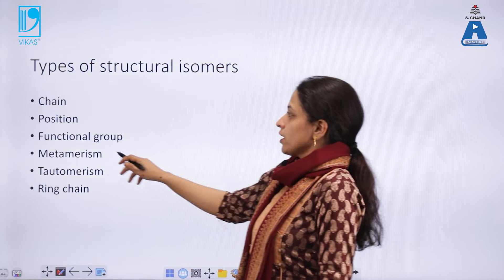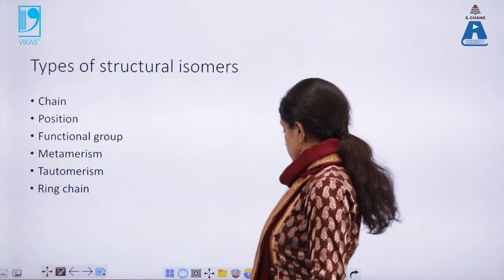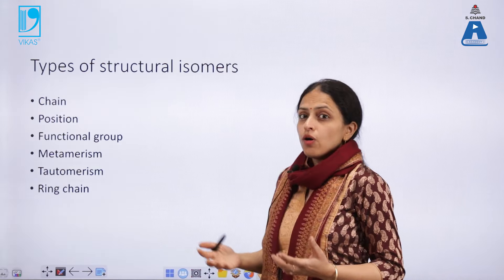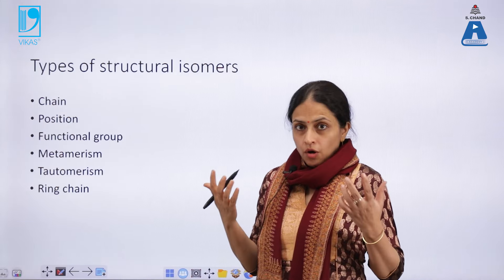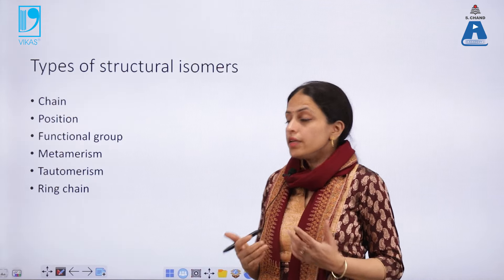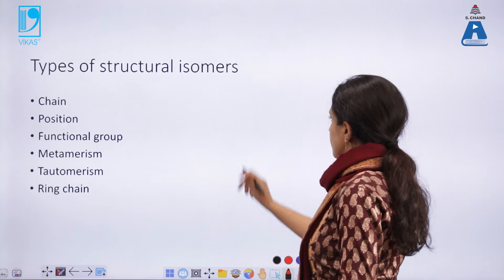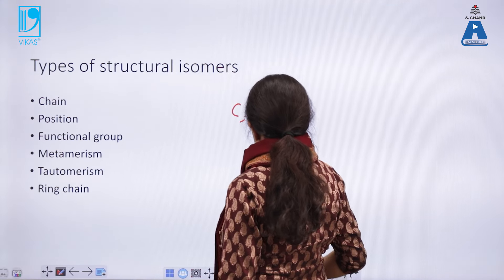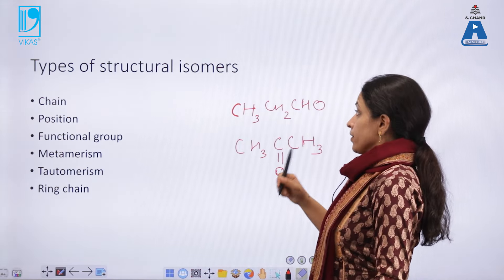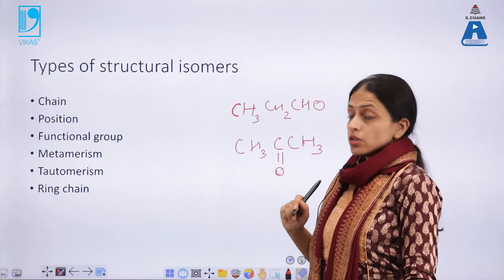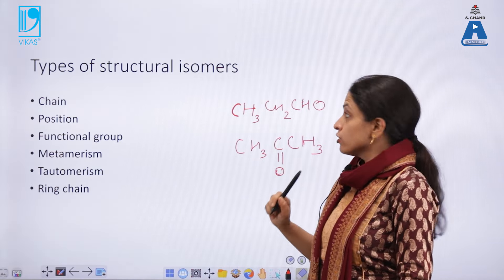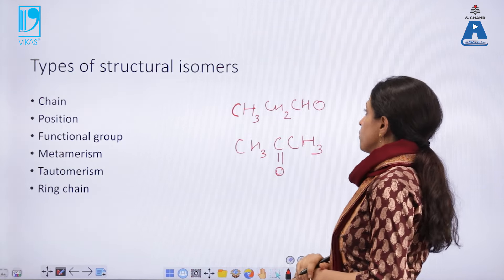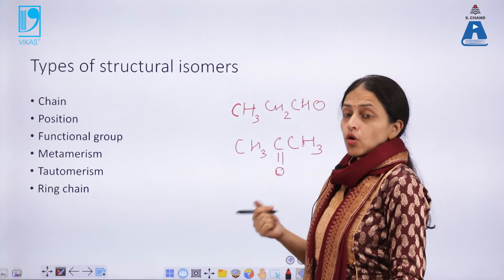The third category is functional group isomers, which is the most common kind of structural isomer and accounts for much of the diversity of organic molecules in nature. For example, we have an alcohol and two different functional molecules: one is an aldehyde and another is a ketone. Both have the same molecular formula but different structural formulas — one is propanol and the other is acetone, or propanone.